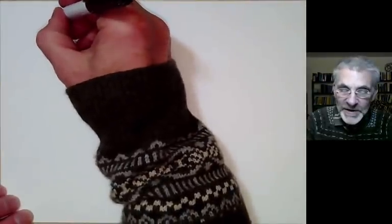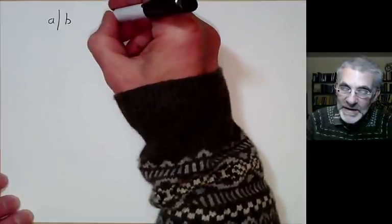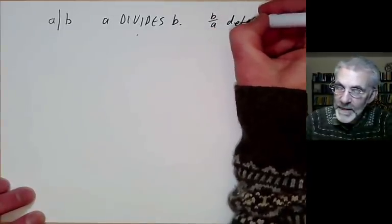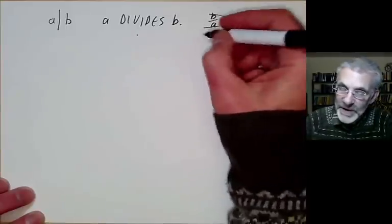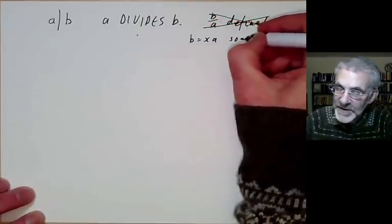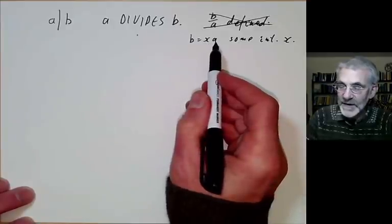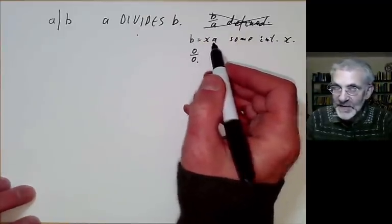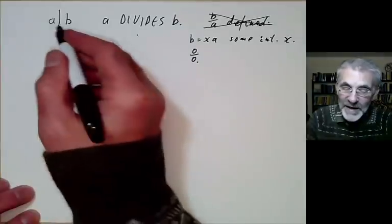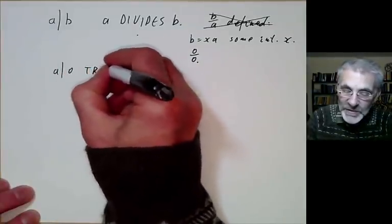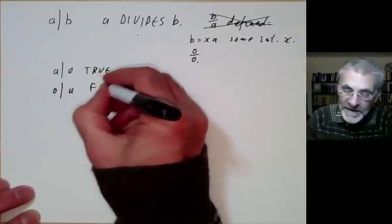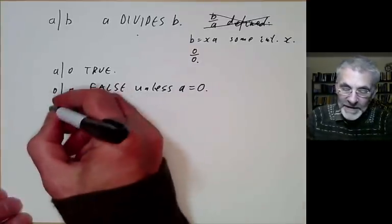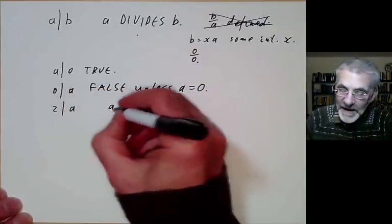First we'll define some notation. We define A vertical line B to mean A divides B. You may think this means that B over A is defined, but that's not quite correct. What it really means is that B is equal to x times A for some integer x. Note that 0 over 0 is not defined, but 0 is still x times 0 for any integer x. So in particular, A divides 0 is always true for any A, and 0 divides A is false unless A equals 0. As another example, 2 divides A is just a fancy way of saying that A is an even integer.